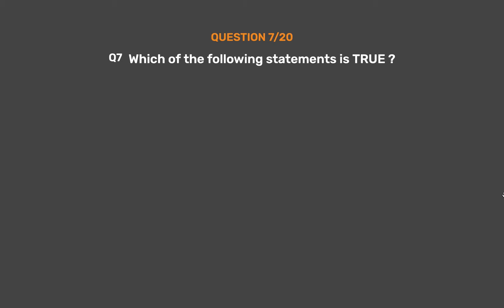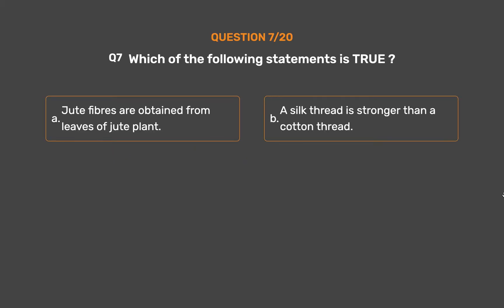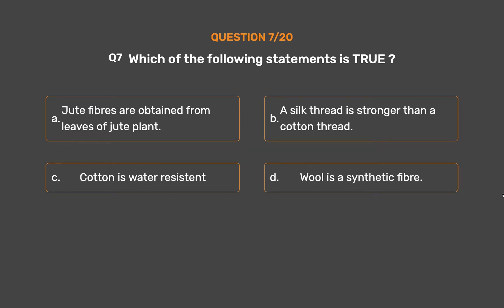Question number 7. Which of the following statements is true? Option A, Jute fibers are obtained from the leaves of the jute plant; Option B, A silk thread is stronger than a cotton thread; Option C, Cotton is water-resistant; Option D, Wool is a synthetic fiber.